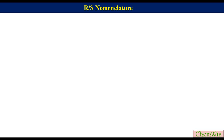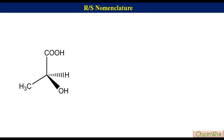Now we will do some exercises for more clarification. Suppose we have lactic acid represented by a perspective formula. For the determination of absolute configuration, first label the groups attached to the chiral center according to their priorities: OH is 1, carboxylic acid is 2, methyl is 3, and H is 4. The fourth priority group is on a hatched wedge, so there is no need for interchange. Draw an arrow from 1 to 3 via 2. Since the direction of the arrow is counter clockwise, the configuration will be S.